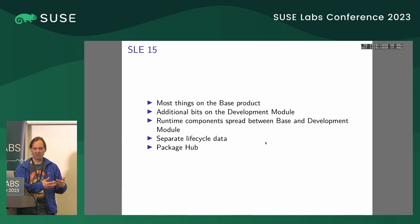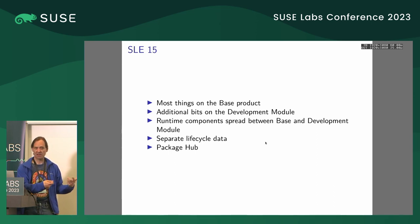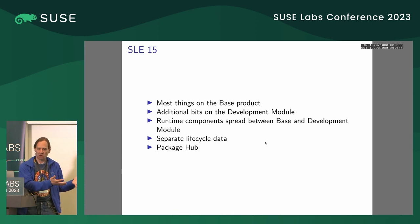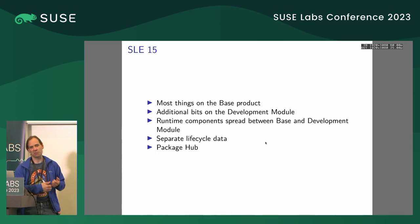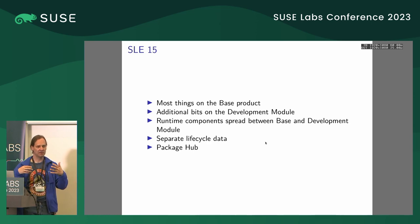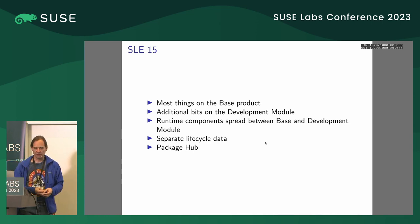We have a stable ABI, so we update the C++ runtime via a regular package update for the base product, because the C++ runtime is pretty core to our product — we can't only ship it in the development module. So usually it's split between the runtime components and the actual compiler.